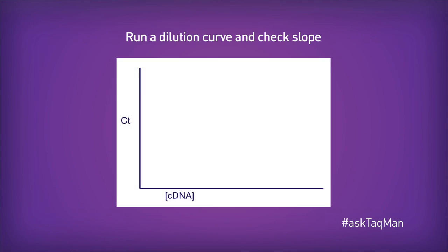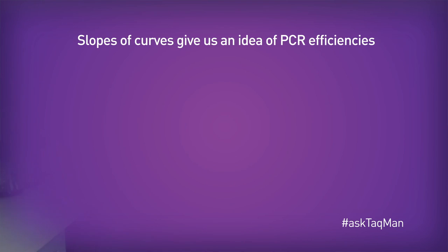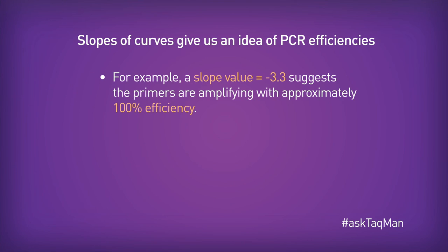Let's start with the basics. To measure the efficiency of an assay, you need to run a template dilution curve in real-time and then look at the resulting slope of that curve. That slope value, assuming you prepare the curve properly, tells you the efficiency. If the slope is negative 3.3, then the assay is amplifying at or very near 100% — exactly what we want in quantitative real-time PCR.